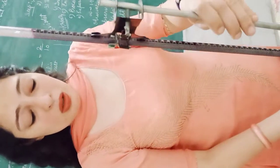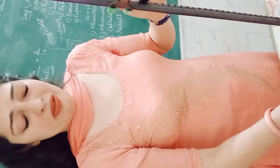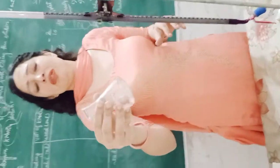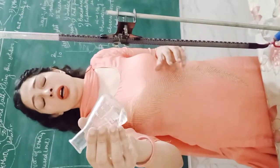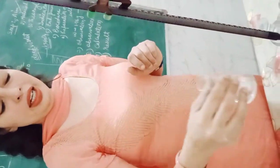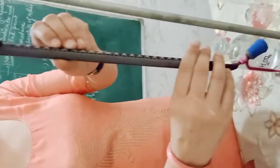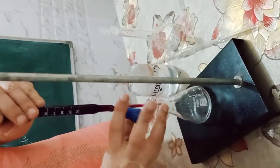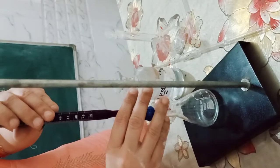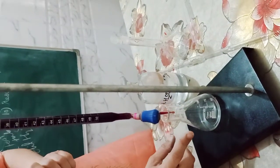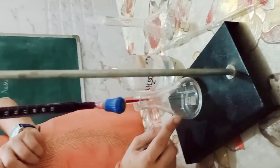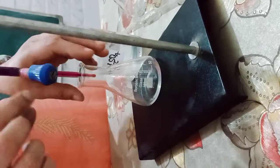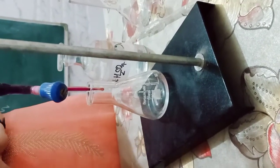So here I have put the Mohr salt into the conical flask and added dilute sulfuric acid. Now, you will arrange the burette so that the tip is centered over the conical flask — which we call the titration flask — placed in the center.